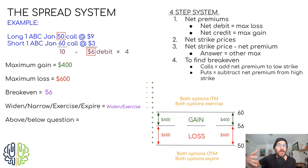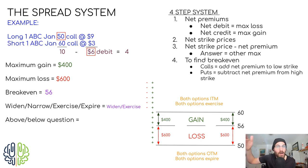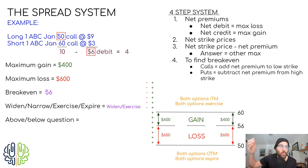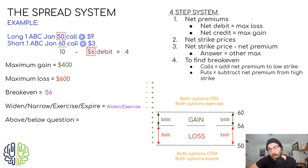In the materials, we talk about how credit, narrow, and expire all have six letters in each of them — and that's a way to remember it. Widen has five, debit has five, and exercise has seven. All the words with six letters go together, and the words that don't also go together.